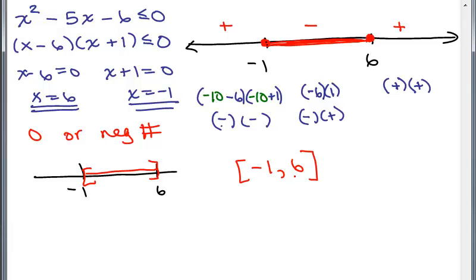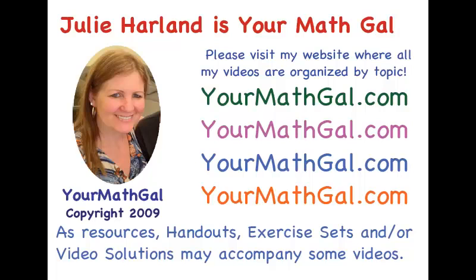If there were no equal sign — just less than zero — we would not include negative 1 or 6 as solutions, putting open circles on the number line and using parentheses in interval notation instead of brackets. That's the kind of problem we'll do in the next video. This is YourMathGal, Julie Harland. Please visit my website at yourmathgal.com where all of my videos are organized by topic.